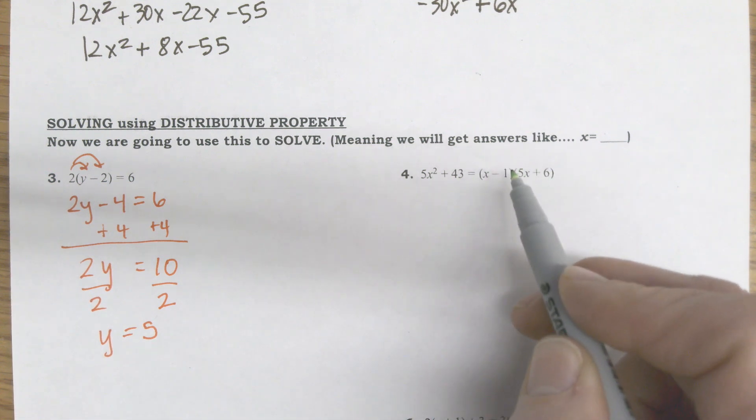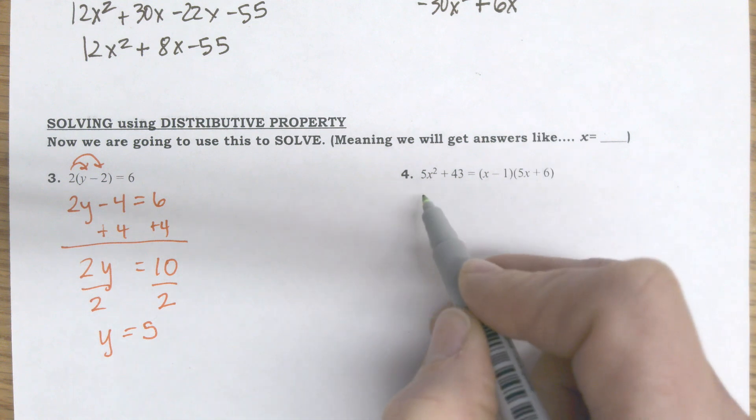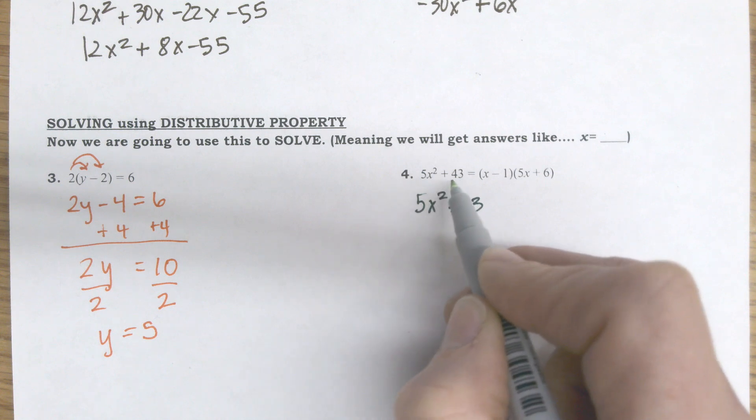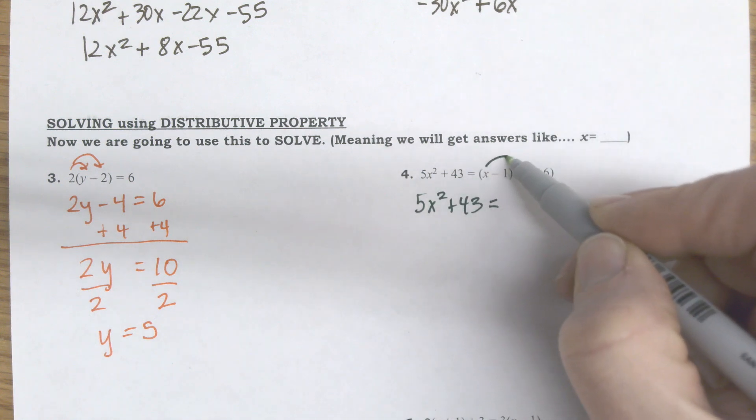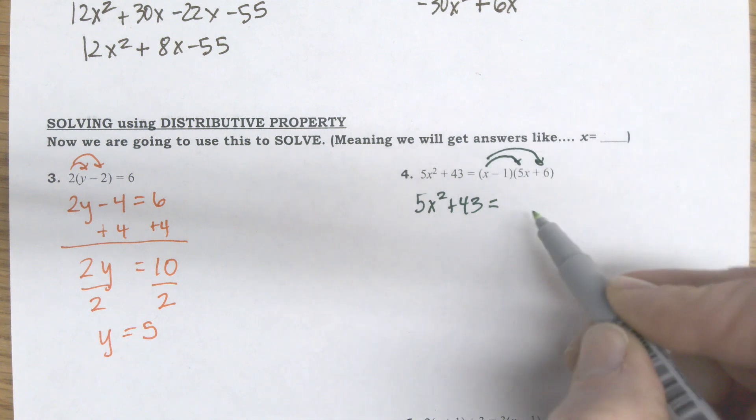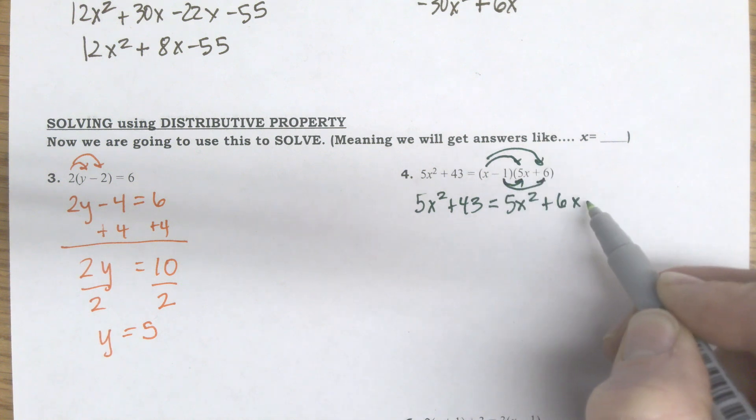If you are choosing to use the box method, then off to the side, do your box method simplifying and then bring it back in. I'm going to do the distributive property. So this is 5x squared plus 43. That's on the left-hand side of the equation. I'm not doing anything with that. And then on the right, I'm going to go ahead and do my double distribute. So that's 5x squared plus 6x. Then I'll distribute the negative one part of it. That's minus 5x minus 6.